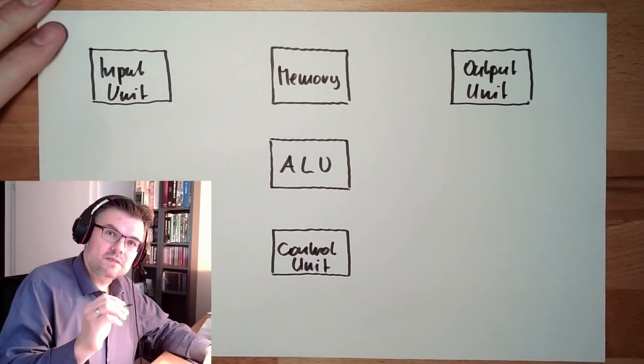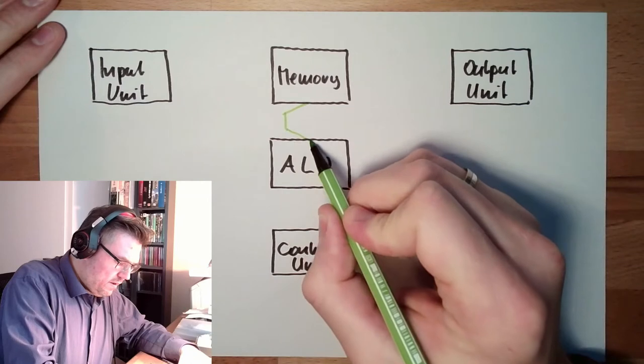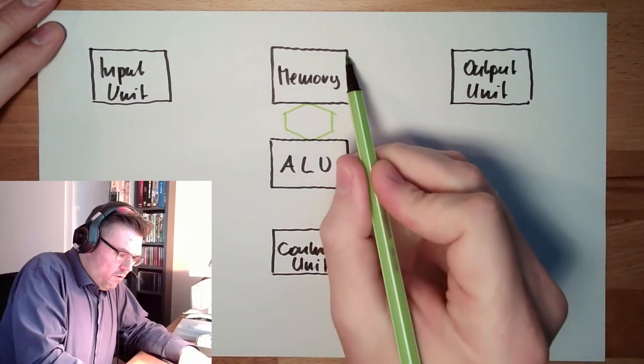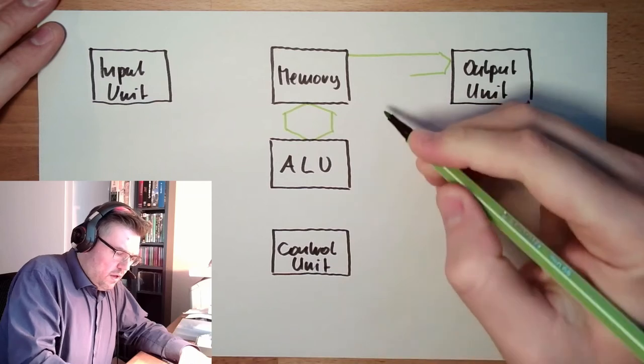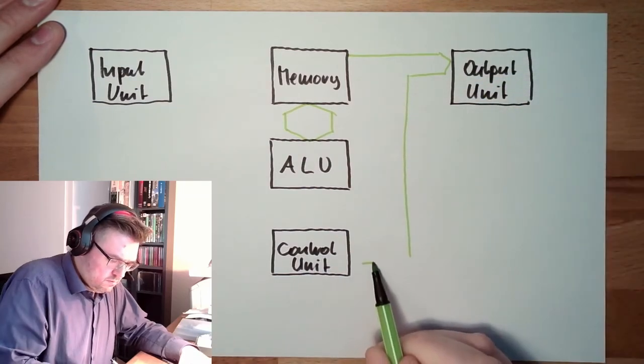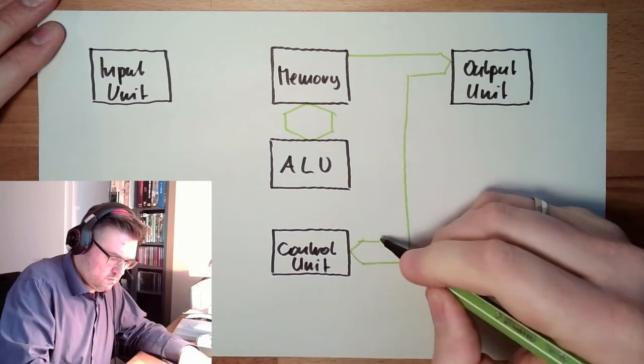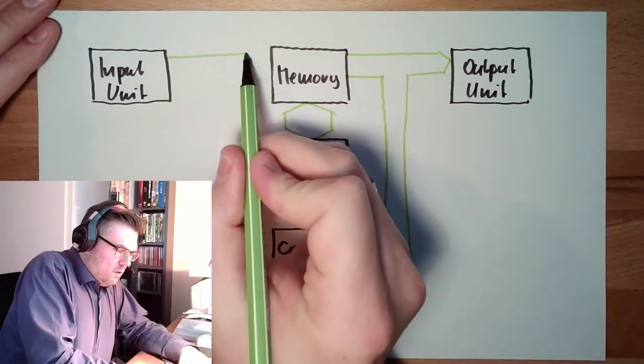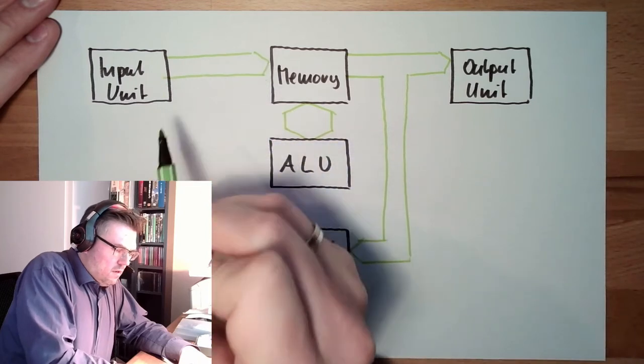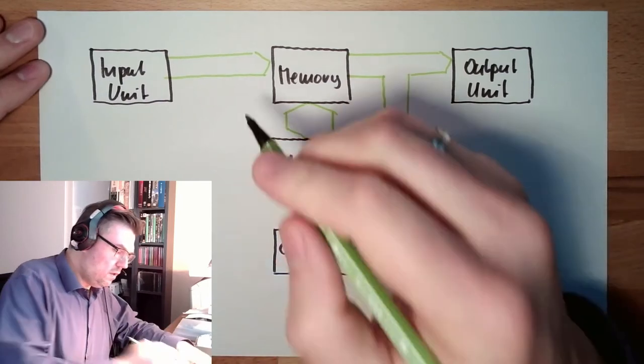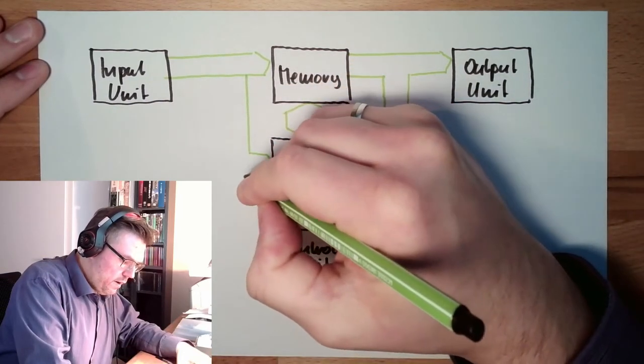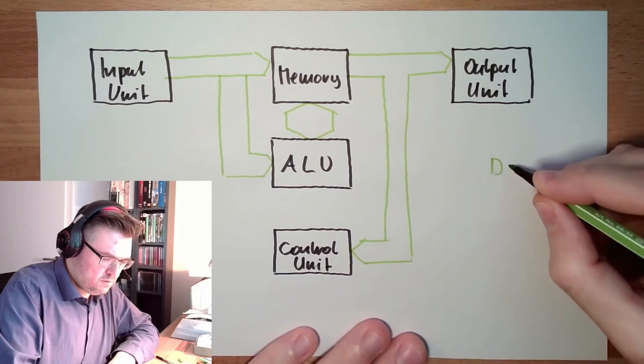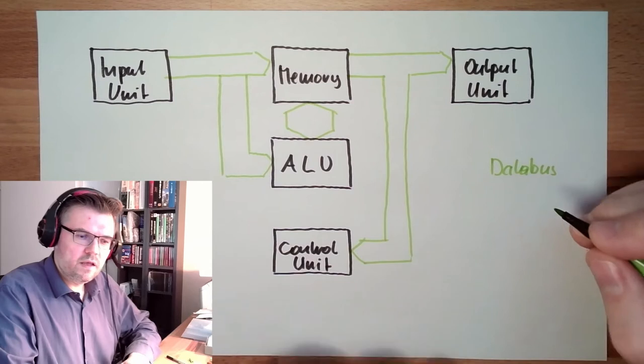There is a so-called bus system. The bus system can transfer data from the memory to the arithmetic logic unit. Of course it can also transfer data from the memory to the output and from the memory to the control unit. And there is also a bus which can go from the input unit and also to the arithmetic logic unit. There is also a side way. These things here, this is the so-called data bus. Here data can be exchanged.